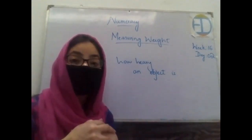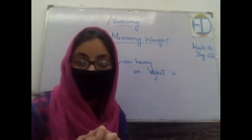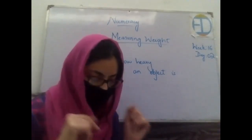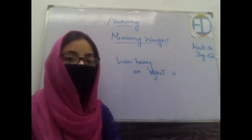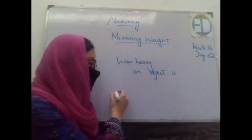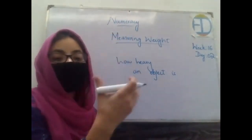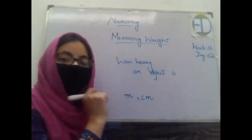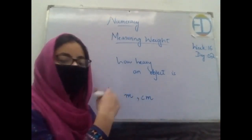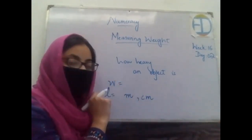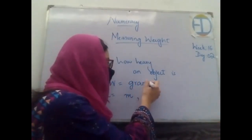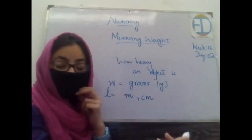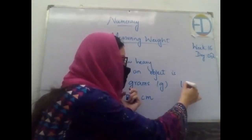Since you don't have clay with you right now, this is your home assignment — practice it at home and let me know whether the weight changes. Now let's talk about the unit of weight. Just like the standard unit to measure length is meters, and for smaller lengths we use centimeters, similarly for weight the standard unit is grams and the symbol is 'g'. For bigger measures, we use kilograms and the symbol is 'kg'.